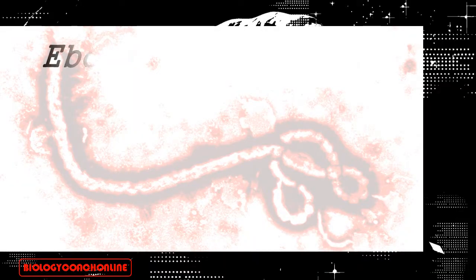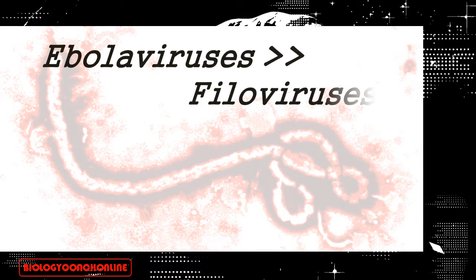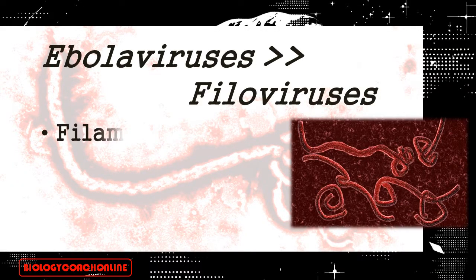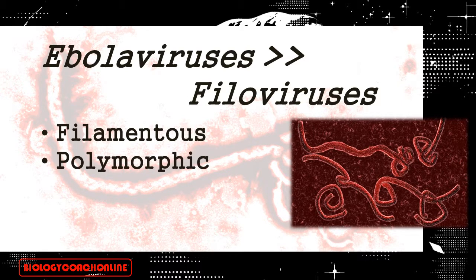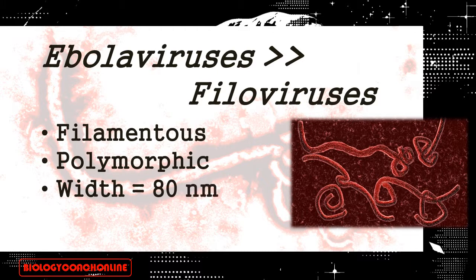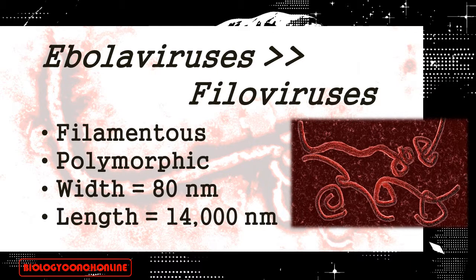Ebola viruses are examples of filoviruses. Filoviruses, morphologically, are filamentous viruses. Ebola virions may take the shape of a shepherd's crook, a ewe, or the number 6. They can be coiled, toroid or donut-shaped, or even branched. Ebola virus virions are roughly 80 nanometers wide and about 14,000 nanometers from one end to the other.